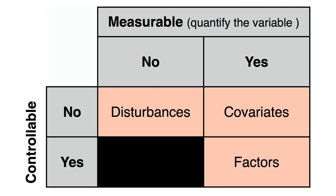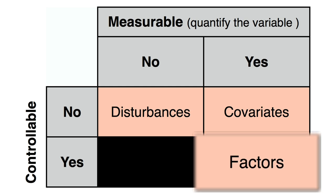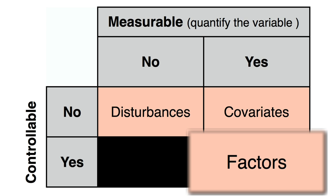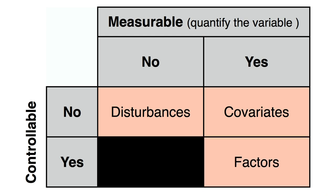Now we're going to make a subtle distinction. There are variables you can control and choose to actively vary. We call them factors. You can control these variables and you can measure them.